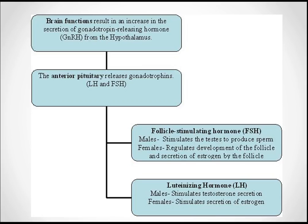Luteinizing hormone in males stimulates testosterone secretion, and in females stimulates the secretion of estrogen. In males, Leydig cells respond to LH, which stimulates the first step in testosterone production. In females, LH binds to theca cells and stimulates steroidogenesis. FSH binds to Sertoli cells in males, where it increases the mass of seminiferous tubules and supports sperm development. In females, FSH binds to granulosa cells and stimulates the conversion of testosterone to estrogen.